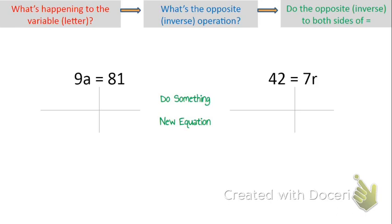Let's go over a couple of examples. For 9a equals 81, you find the variable and ask what's happening to it — what's keeping it from being by itself. There's a 9 here. When two numbers are smushed together like this 9 and a, that means we're multiplying. So what's keeping a from being by itself is that it's being multiplied by 9. The opposite of multiplying is to divide, so I'm going to divide by 9 to undo this multiplying by 9.